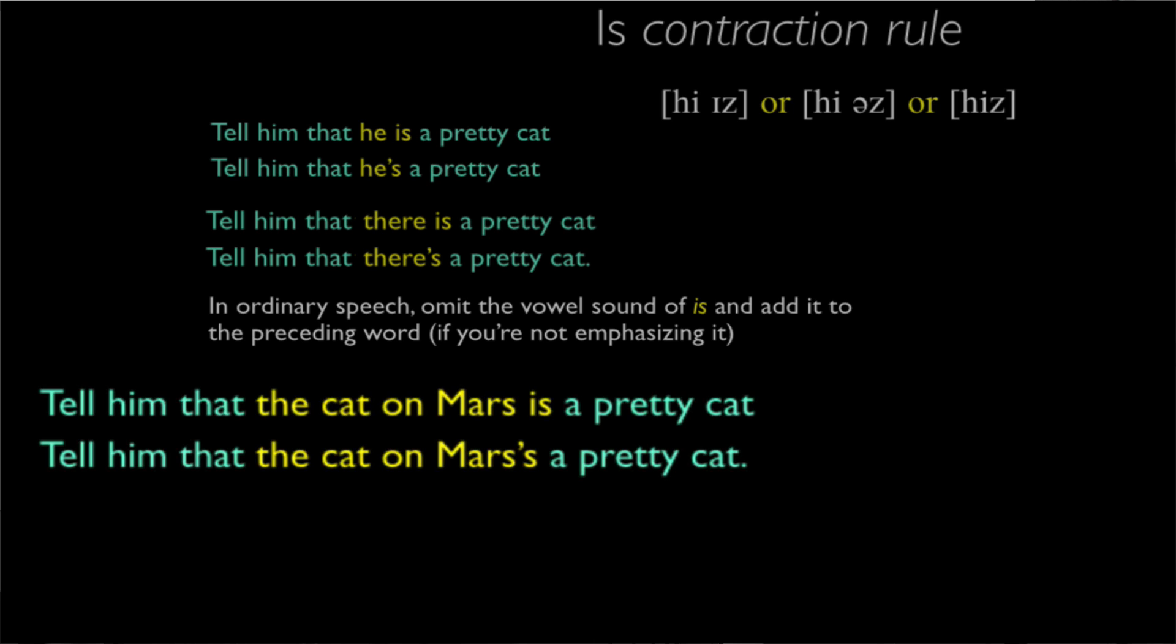But what we can't do is reduce the vowel of 'is' to nothing at all. At least in general American English, we can't say, 'tell him that the cat on Mars is a pretty cat.' Why not?